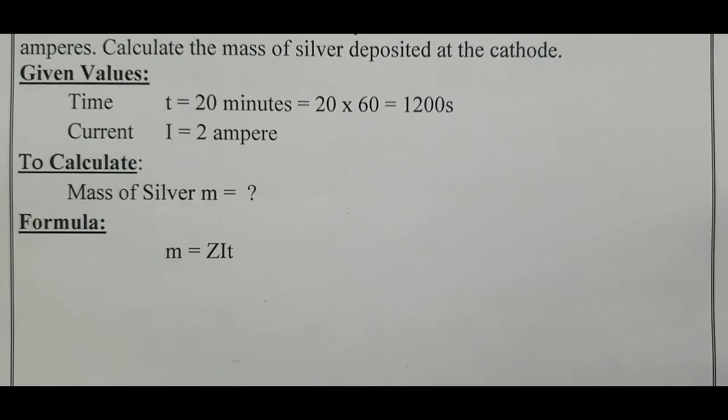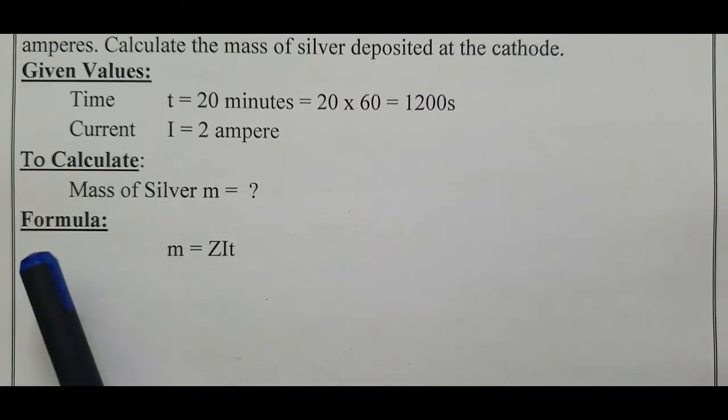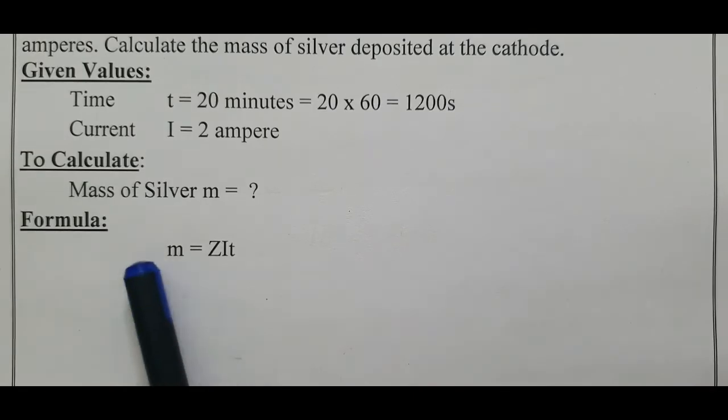We have to calculate mass of silver m = ? Formula according to Faraday's first law: m = Zit. First we calculate the Z.